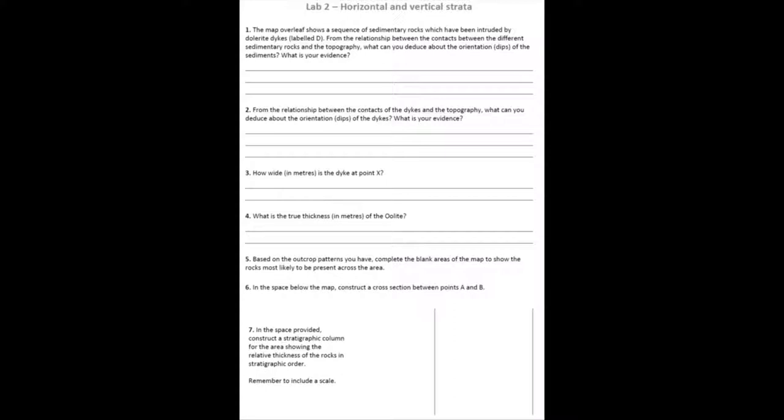In this lab, we have a sheet of questions which ask you questions about the orientation of beds and other geological features, working out from the scale on the map how wide geological features are and how thick they are. Then using a geological cross-section and a map to reconstruct a stratigraphic column for an area. You have been given a partially completed map and a hill profile panel that you can draw a cross-section on.